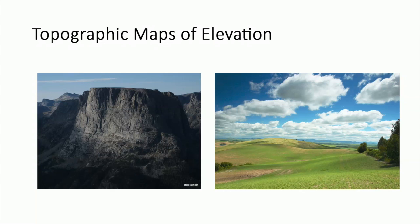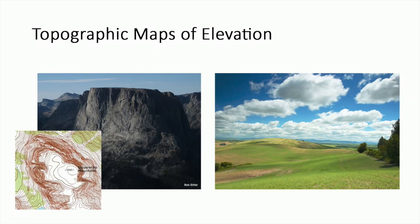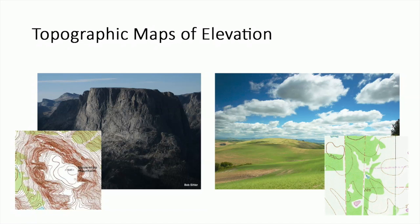Can you imagine what the contour lines for these features might look like on a topo map? The left image would have a topo similar to this with cluttered contours, while the image on the right would have a topo with sparse contours.